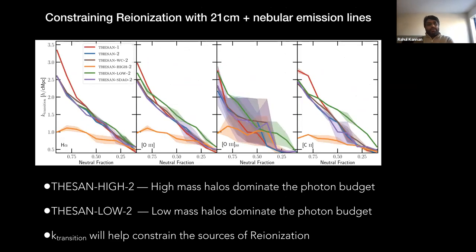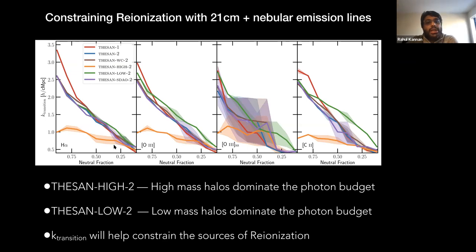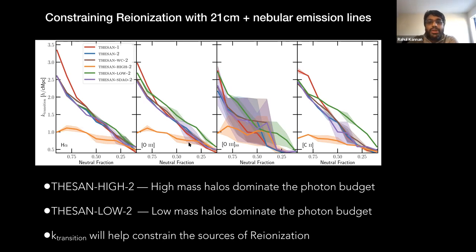For example, I plot the transition wave number as a function of neutral fraction for different reionization models. If only high-mass galaxies contribute to reionization, then no matter what line you look at in the cross-correlation, the transition wave number is always small. Whereas if you have a model like green or red where low-mass galaxies contribute, the transition wave number varies more rapidly and is higher in general. The brown is an alternative dark matter model — so you can even constrain the nature of dark matter using this kind of method.